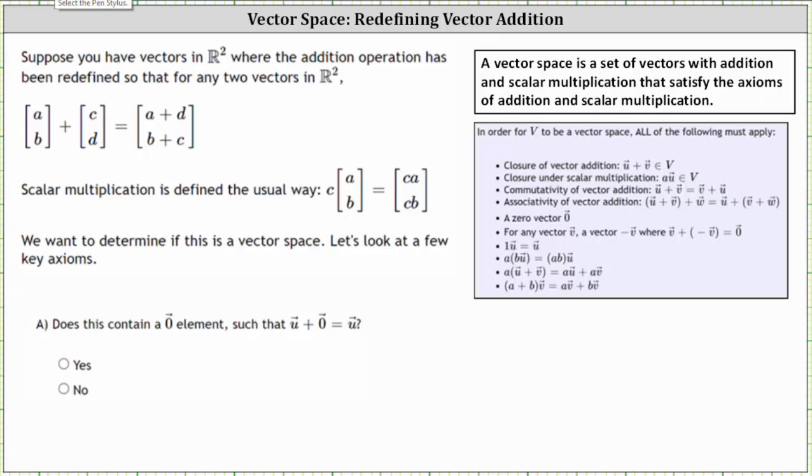Suppose you have vectors in R² where the addition operation has been redefined so that for any two vectors in R², the sum is shown below. We'll notice for this sum, the first entry is A plus D, and the second entry is B plus C. Scalar multiplication is defined the usual way. We want to determine if this is a vector space. Let's look at a few key axioms.